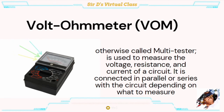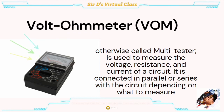And lastly, we have the voltometer or VOM, also known as the multi-tester. This is used to measure the voltage, resistance, and current of a circuit. Remember these three concepts: voltage, or the electrical pressure; resistance, or the force that helps control the flow of electricity; and lastly, current, or the flow of electricity. All of these are measured and it is connected in parallel or series with the circuit, depending on what is to be measured.